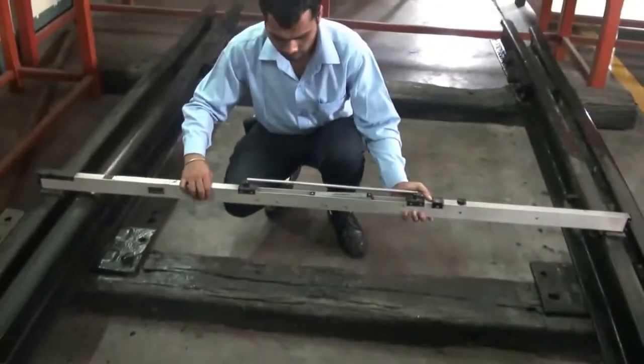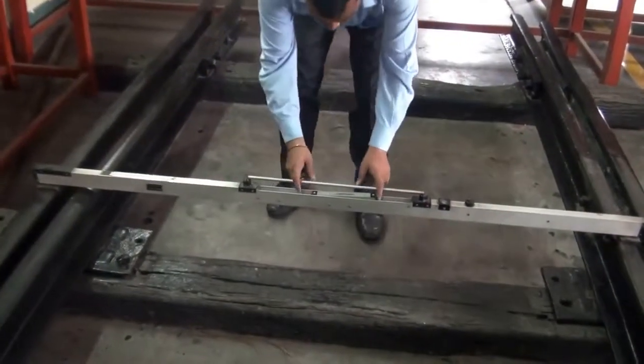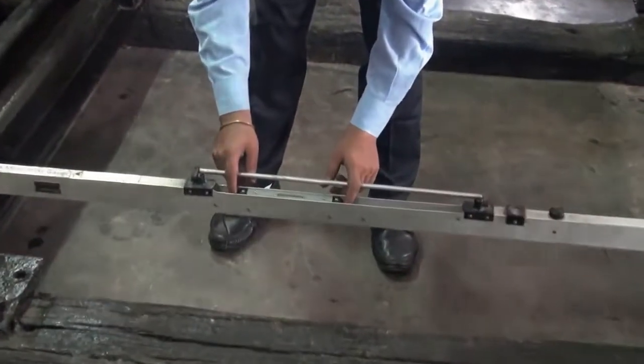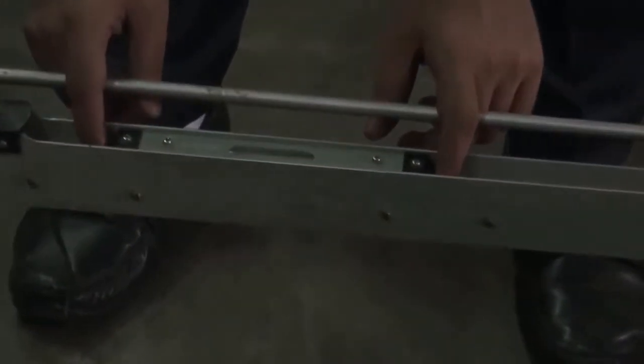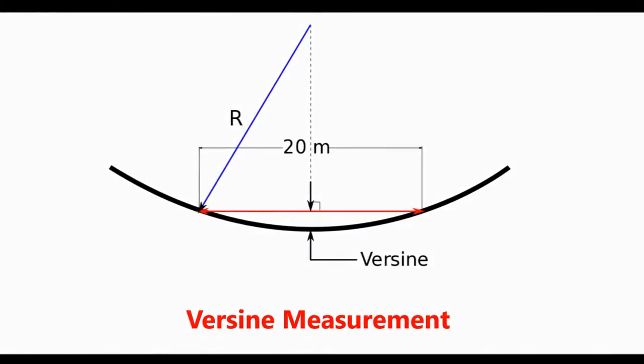To measure the cross level of the track, slide the spirit level in the slot until the bubble stabilizes in the center. Then note down the graduation mark coinciding with the end of the spirit level. Another important track parameter is versine.